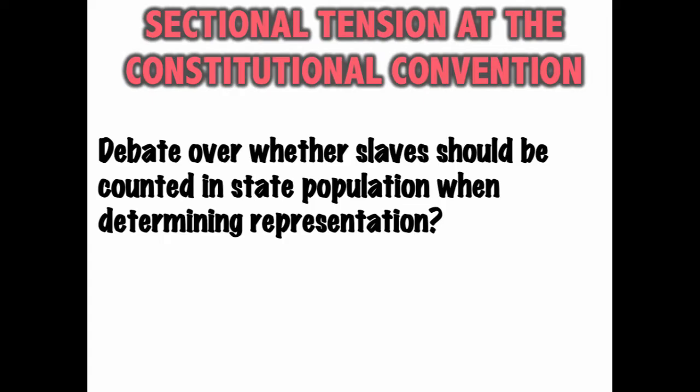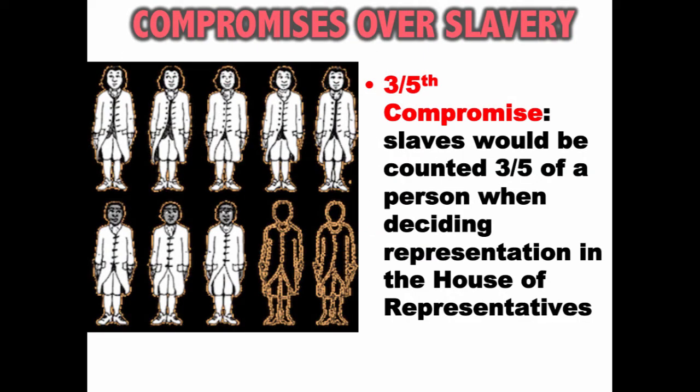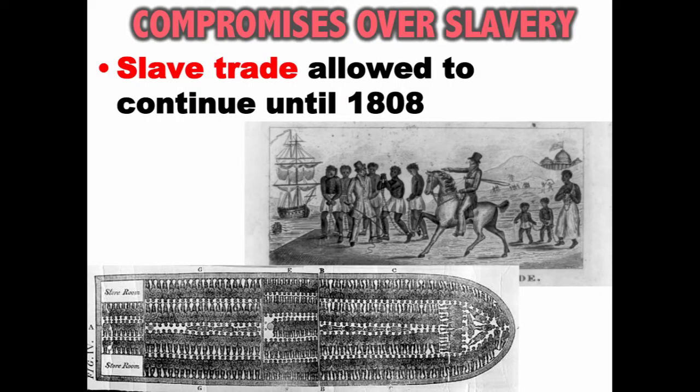Counting slaves would help the South since it would give them additional representatives. To solve this issue, the Three-Fifths Compromise was agreed to, which stated that slaves would be counted as three-fifths of a person when deciding representation in the House of Representatives. This was not the only deal made at the convention — in addition, the slave trade was allowed to continue until 1808.